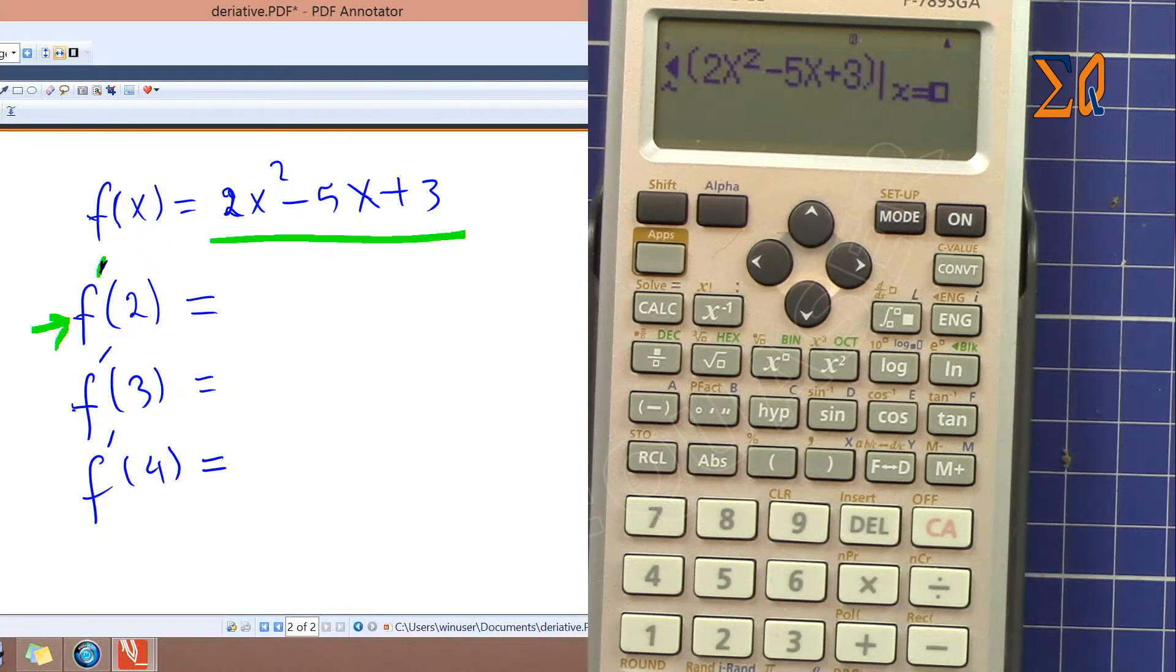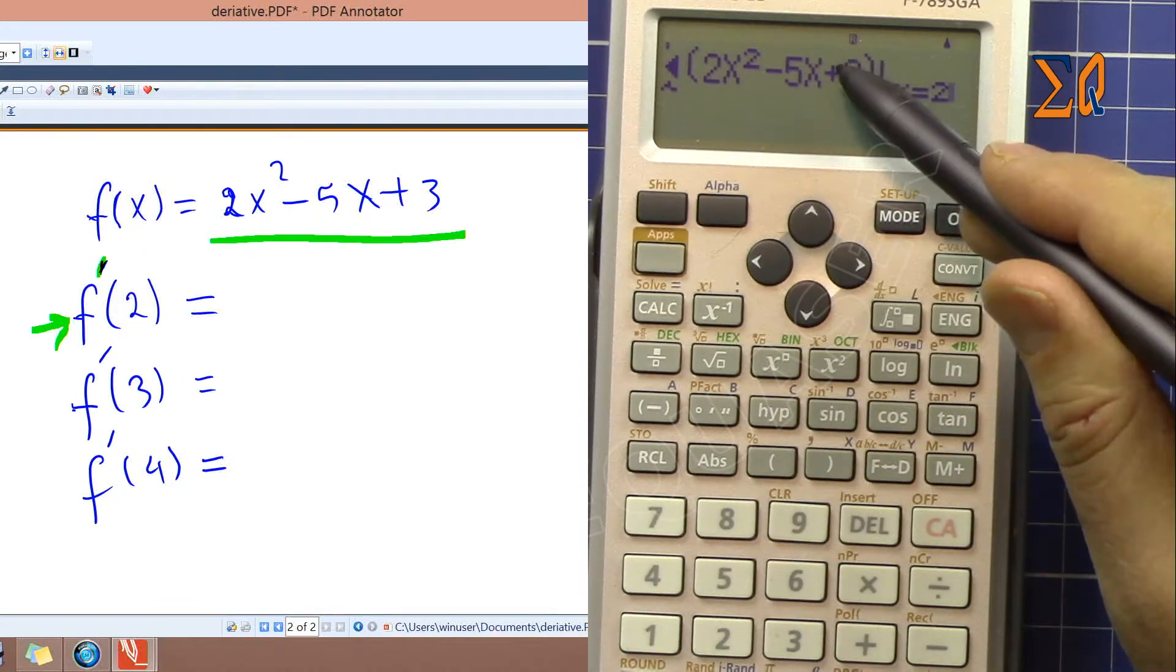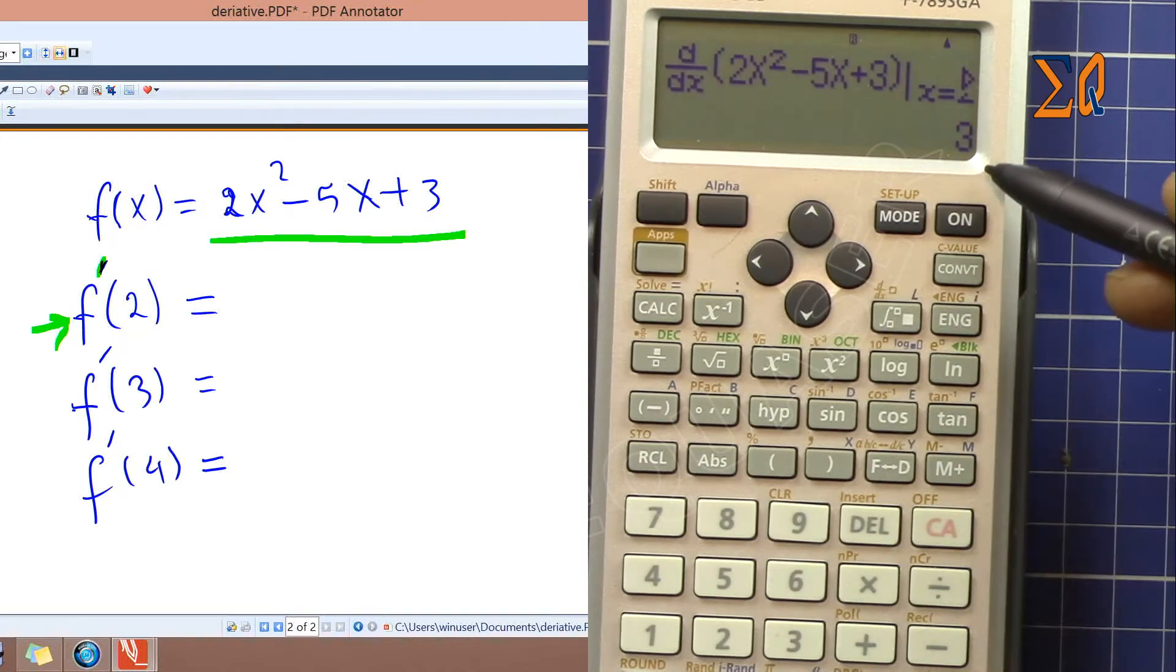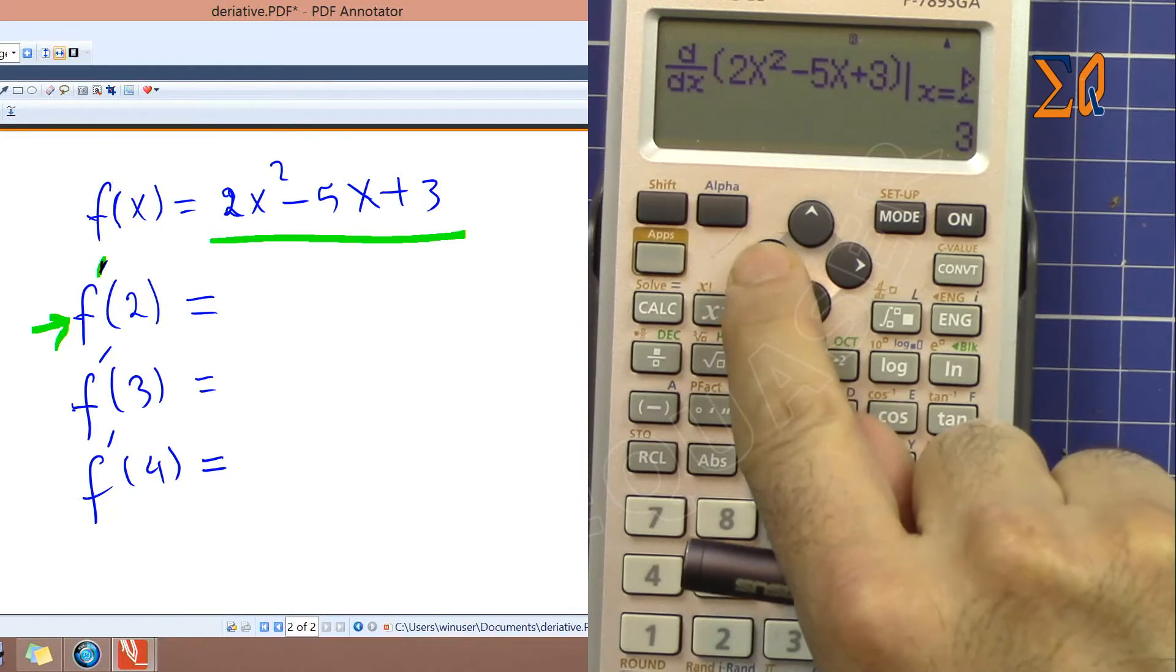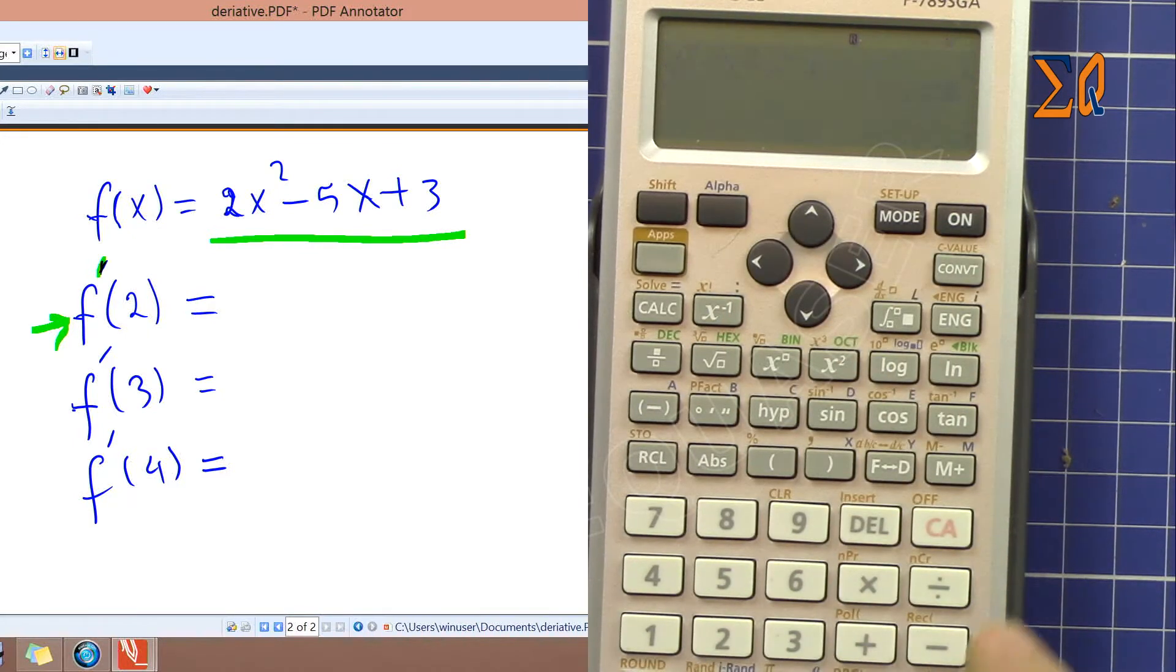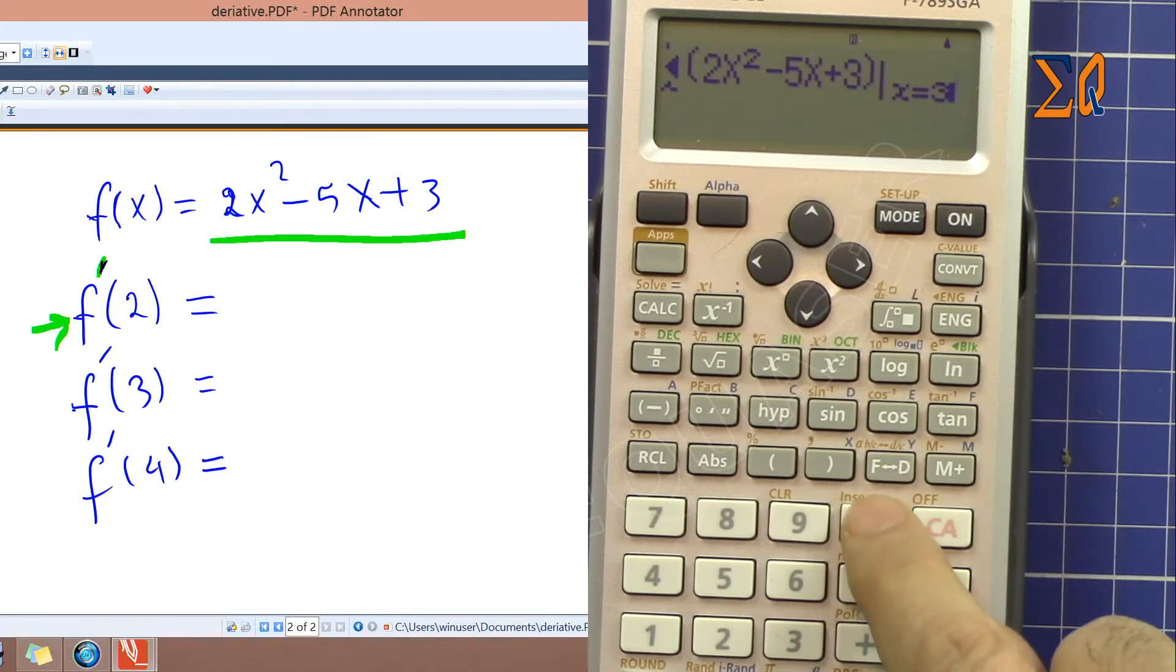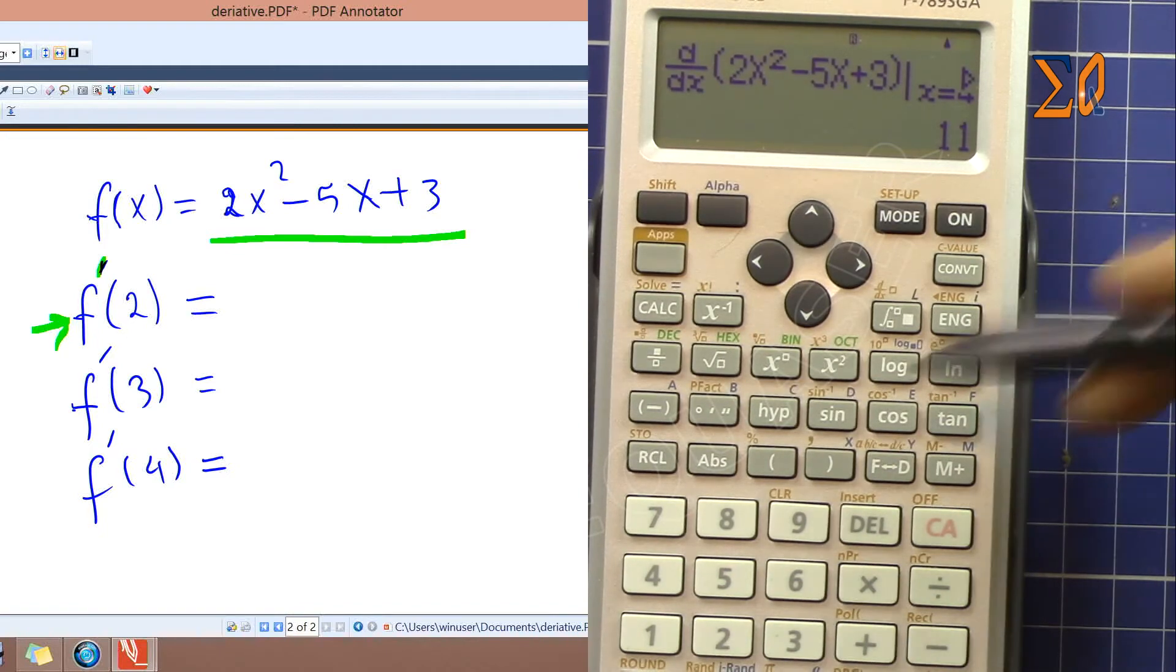Now we are doing the first one, 2, so it means take the derivative and evaluate it with X equal to 2. This is 3. To do another value, just press left arrow, go there, change it to 3 and evaluate it. We got 7. Go back and do 4, so we got another value. This way you can evaluate.